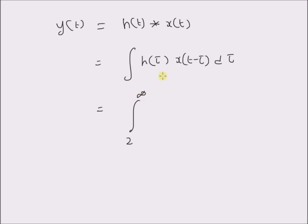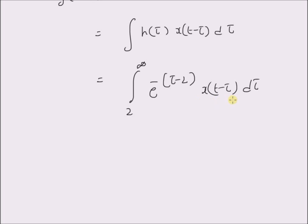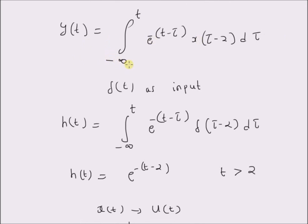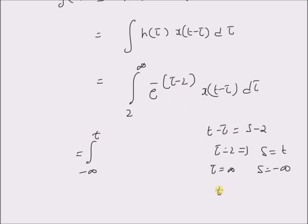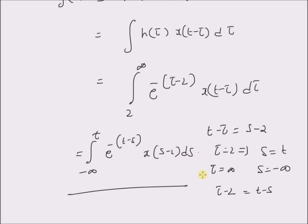So the integral is from 2 to infinity of e^(-(τ-2)) · x(t-τ) dτ, where x(t-τ) is the reversed and shifted version of the input. To verify this matches the original system equation — integral from minus infinity to t of e^(-(t-τ)) · x(τ-2) dτ — we use the change of variable t-τ = s-2. For τ=2, s=t; for τ=∞, s=-∞. This transforms the integral to the original form: e^(-(t-s)) · x(s-2) ds from minus infinity to t, which is exactly the original system equation.